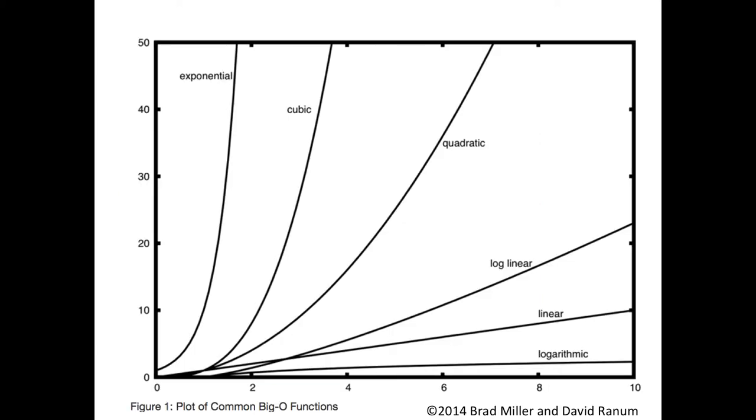So here's a nice curve that simplifies these. On this axis is basically how many operations you have to do, which is going to be proportional to your time on any particular computer. Going across to the right is the size of the problem. So as n gets bigger that's going to be a larger number.